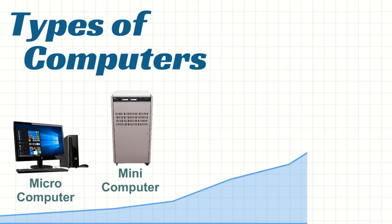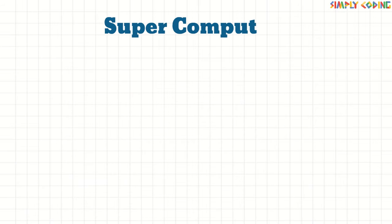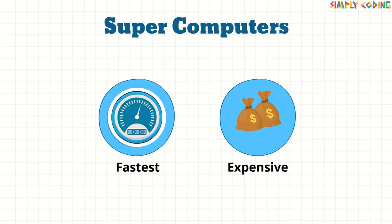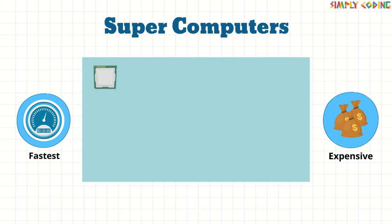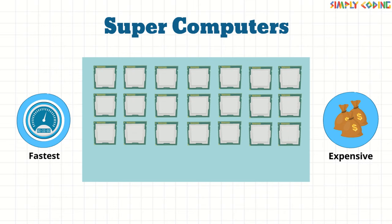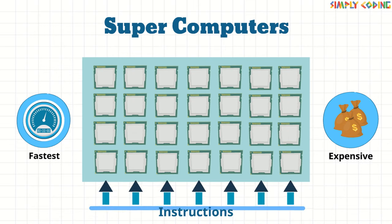Computers are classified into many types based upon their size and speed. The fastest and most expensive computers are supercomputers. They are large and have multiple CPUs, so can handle many instructions in parallel.